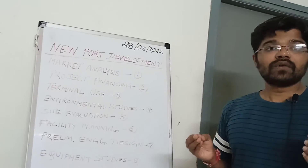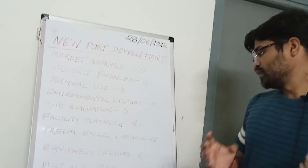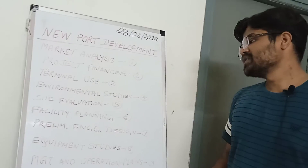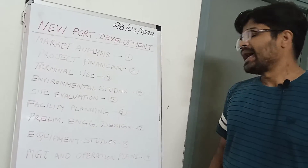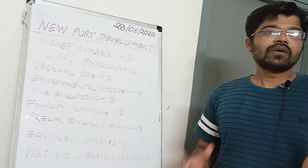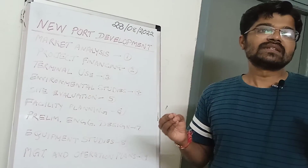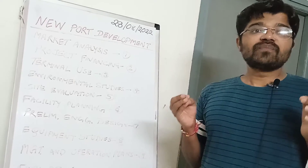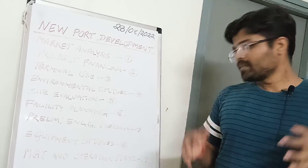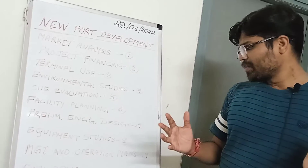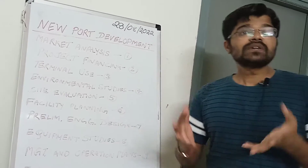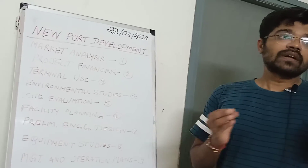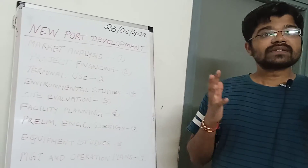Ninth is management and operational plans. Any company or business consists of a management department and an operations department, and there will be various plans developed according to each department.